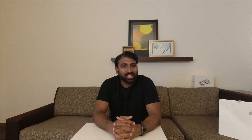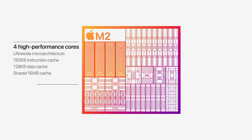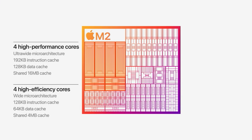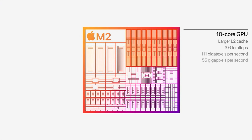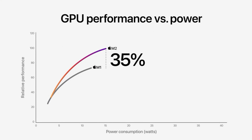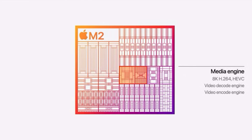The MacBook Air uses the M2 processor. It has 4 high-performance cores and 4 efficiency cores, with two additional cores in the GPU. ProRes RAW video editing is useful for the M2 MacBook.